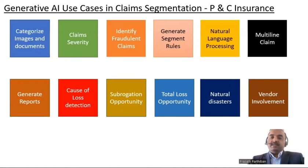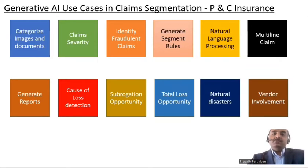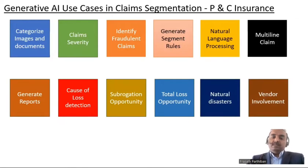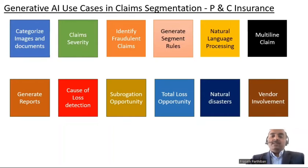This is the second step in the claims lifecycle. Step one is First Notice of Loss, where you take the claim as an input. Step two is you have to segment the claim — is it a complex claim or a simple claim based on the claim attributes? Segmenting the claims helps us to do better assignment. For example, if you have a loss location in California, you do not want to assign that claim to an adjuster in New Jersey. Instead, you want to assign it to the California adjuster. You have to segment the claim so that the right adjuster gets the right claim.